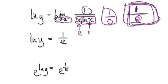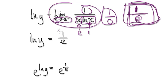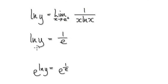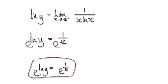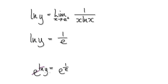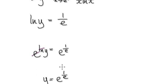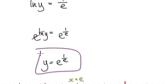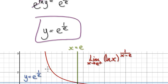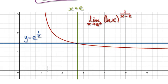As x tends to e from the positive direction, the whole thing tends towards 1 over e. Now exponentiate both sides — e on this side, e on this side — and these two cancel each other out, giving you the final answer. So the limit is e to the power of 1 over e.